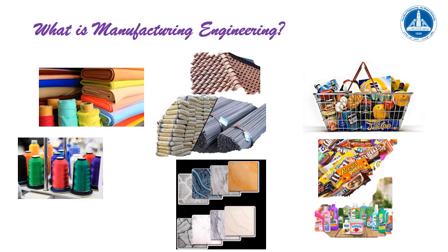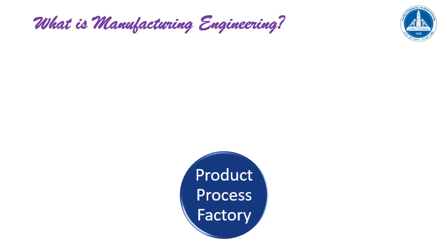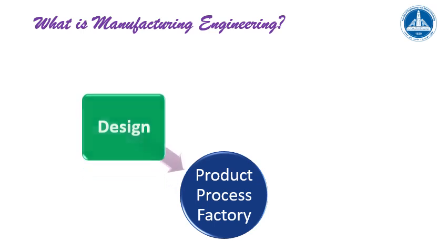We also manufacture textiles and clothing — anything you are going to use in your normal life. A manufacturing engineer participates in transforming the raw material into the final product you are using. We do this mainly by understanding the product, the manufacturing process by which the raw material is transformed into the final product, and where this process occurs — which is the factory.